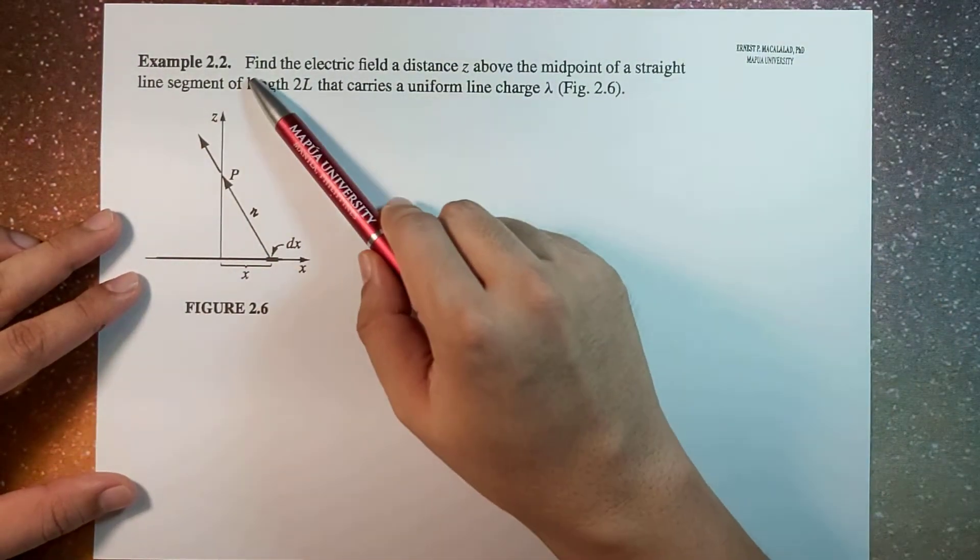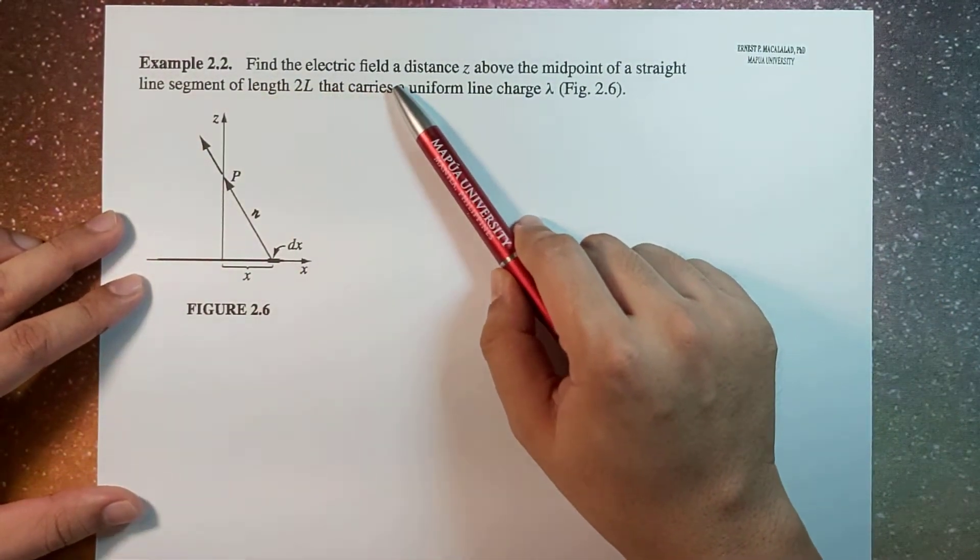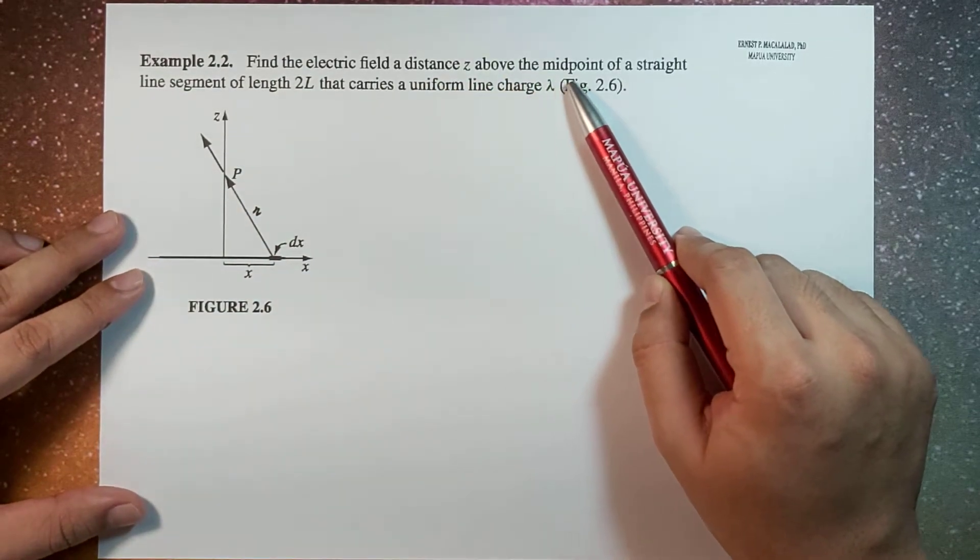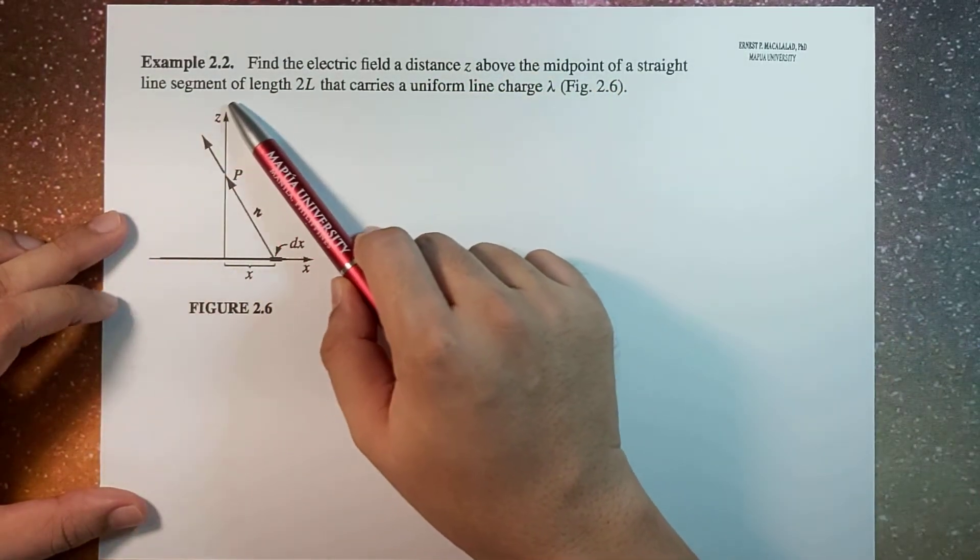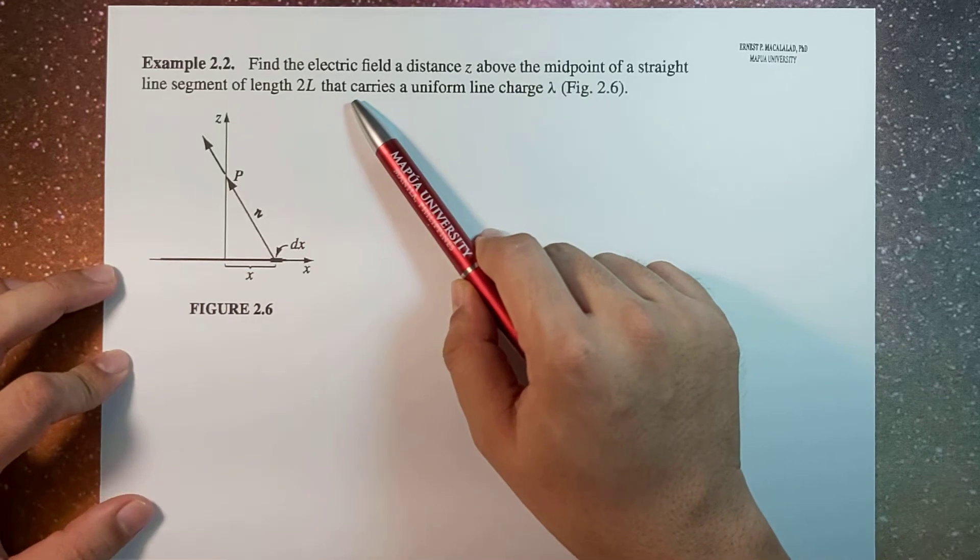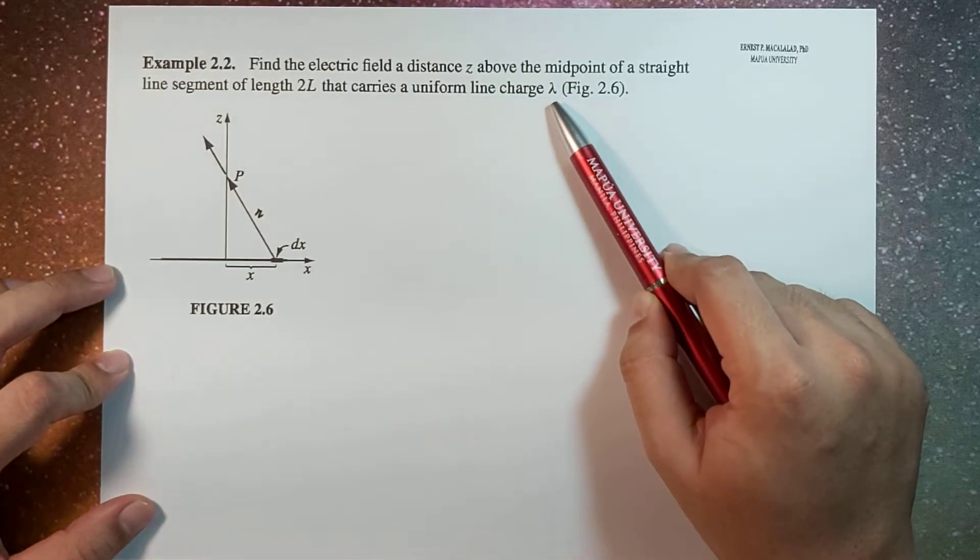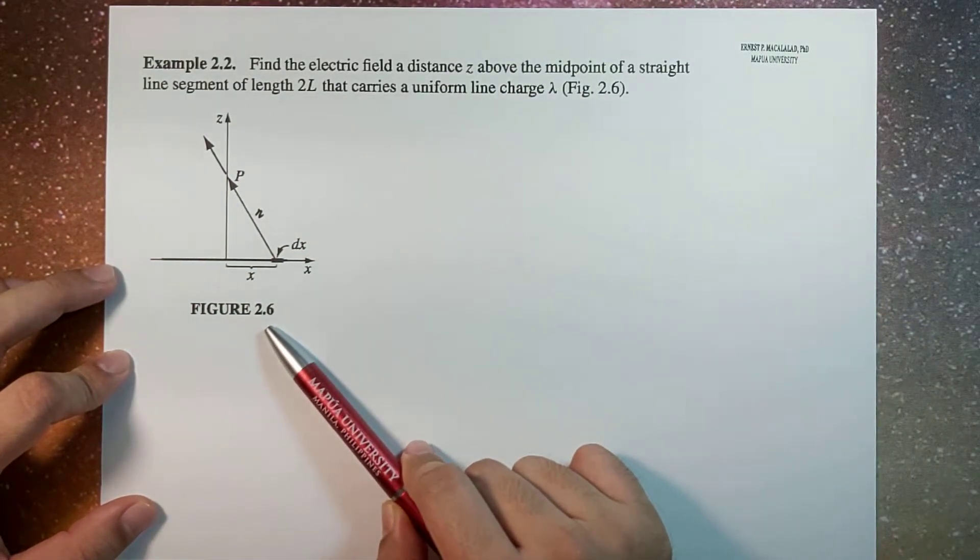The problem reads: Find the electric field at the distance z above the midpoint of a straight line segment of length 2L that carries a uniform line charge lambda, as shown in figure 2.6.